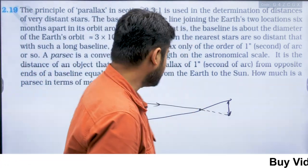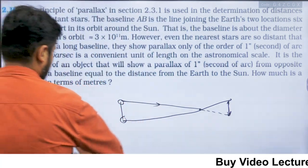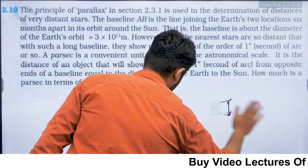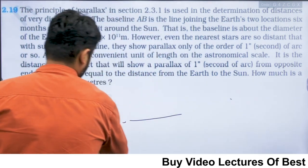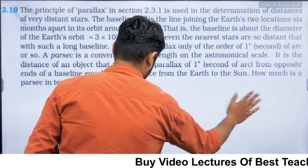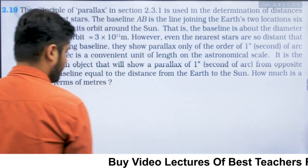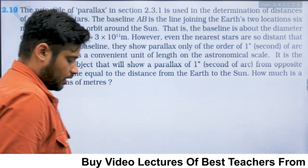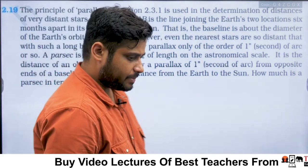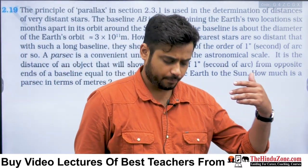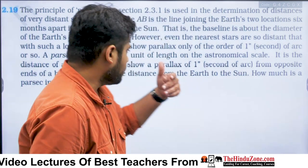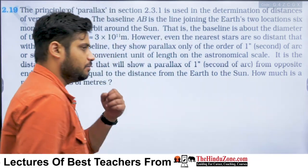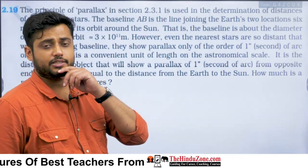When you switch eyes, your line of sight changes, so the object appears to shift position. This apparent shift in position when viewed from two different points is called parallax.